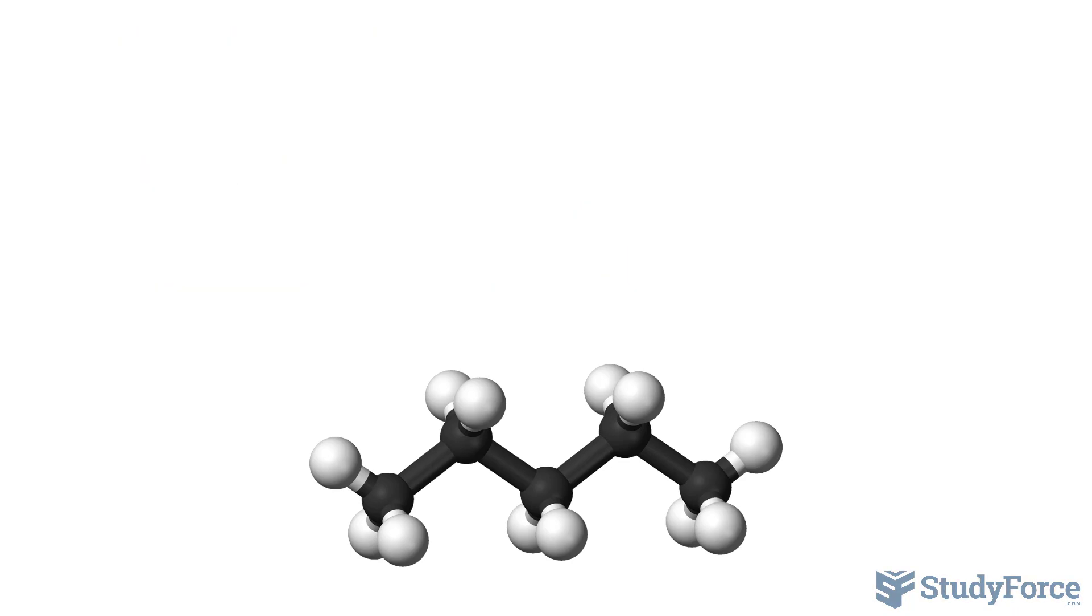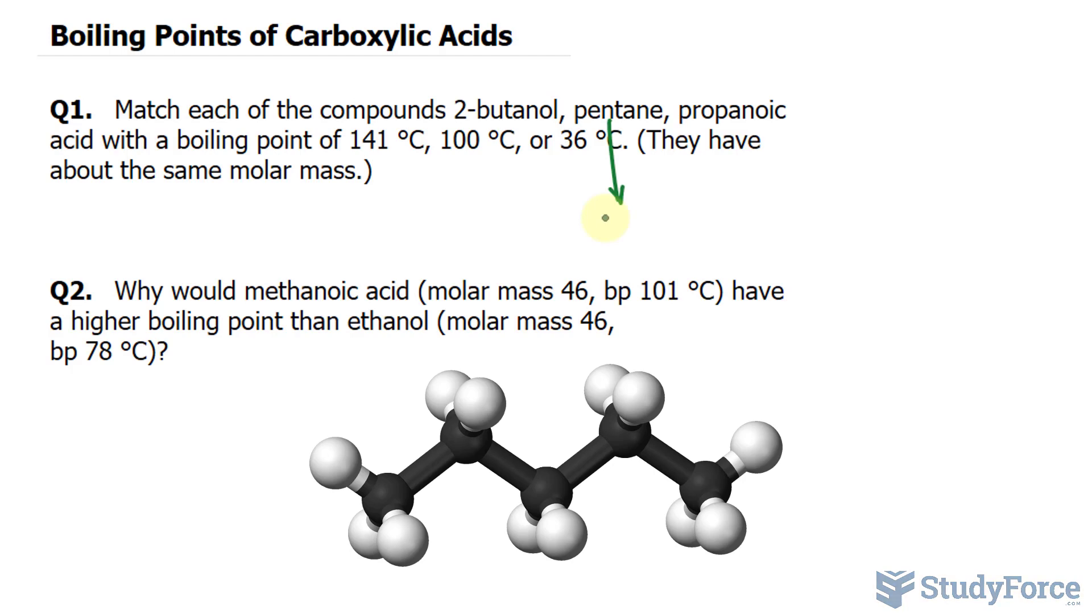This means that the molecules have weak intermolecular forces and that they are loosely held together. They're not cohesive, and only a little bit of heat will make them change state. Therefore, we can say that pentane is 36 degrees Celsius.